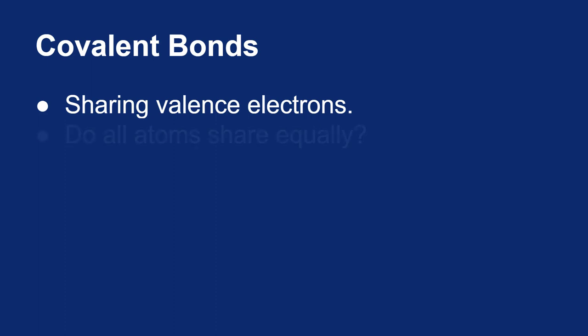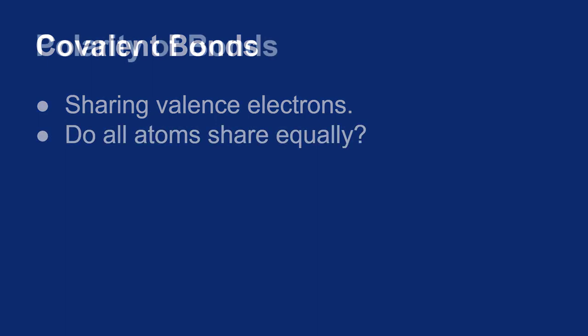The question I want to focus on today is, does sharing mean that electrons are shared equally? Another way to ask is, can bonds be polar? Because if electrons are not shared equally, that means electrons will be spending more time around one atom than the other, meaning one atom will have more of a negative charge and one more of a positive charge.